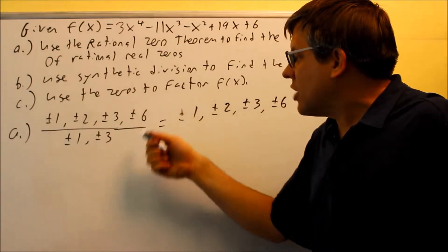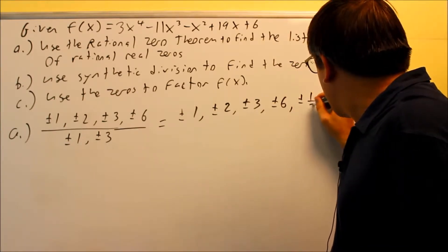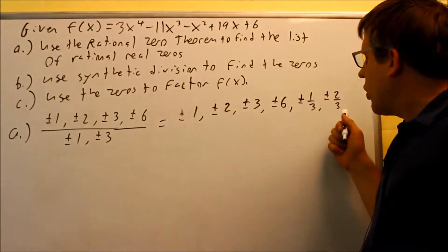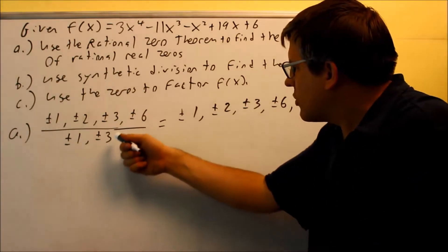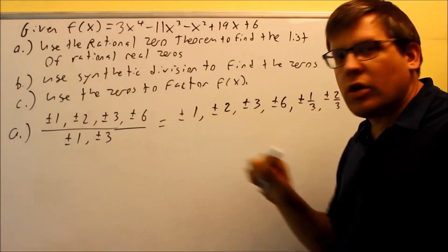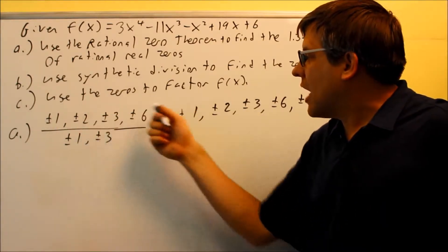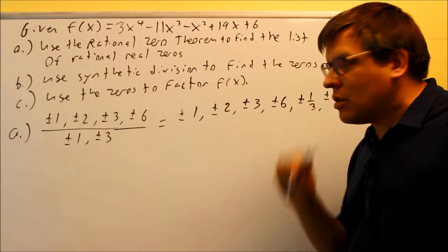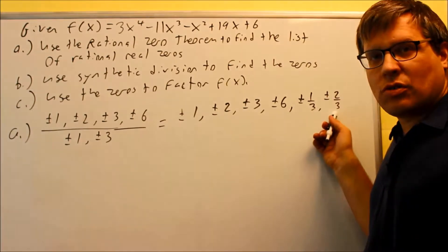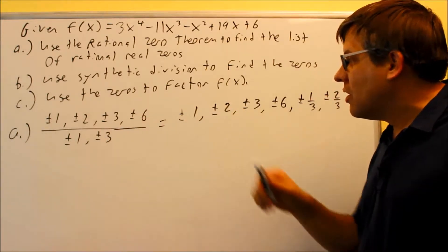Now I'm going to take all the numbers on top and divide by 3. So the next ones are plus or minus 1 third and plus or minus 2 thirds. The ending ones — 3 over 3 gives me 1, and 6 over 3 is 2 — I already have those on my list. If you get a number you already have on your list, you don't need to write it again. That's why I stopped at 2 thirds.